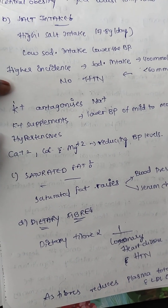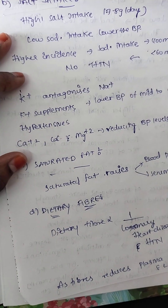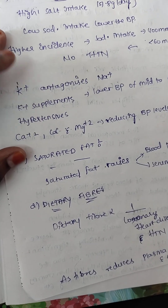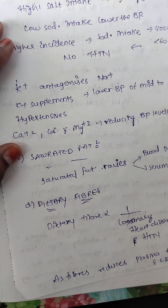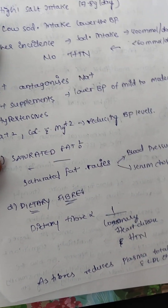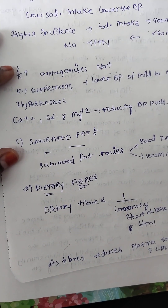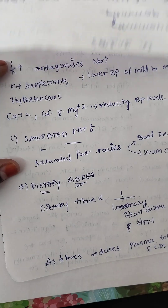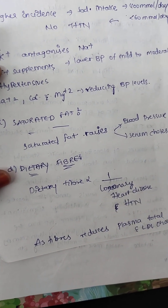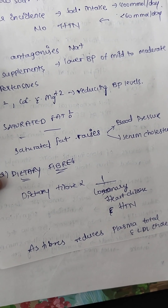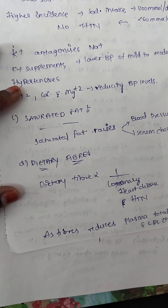Potassium antagonizes sodium via the sodium-potassium ATPase pump — when potassium influxes, sodium effluxes. So potassium supplements are recommended to lower BP. Potassium is also associated with aldosterone. Calcium, cadmium, and magnesium lower BP levels. Saturated fat raises blood pressure and serum cholesterol, both leading to further increase in blood pressure.